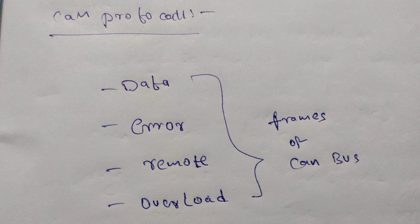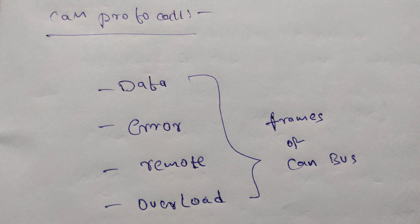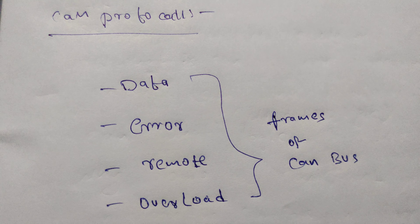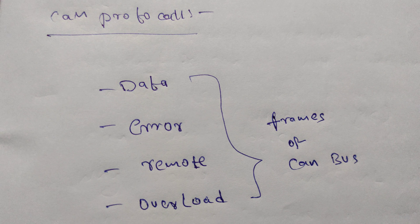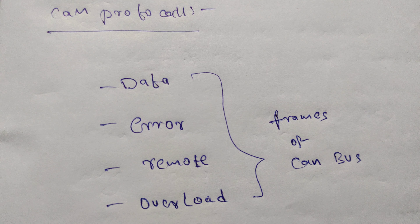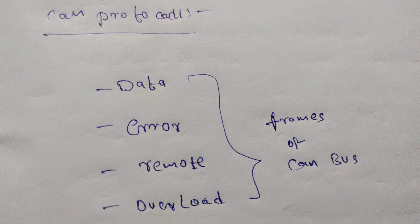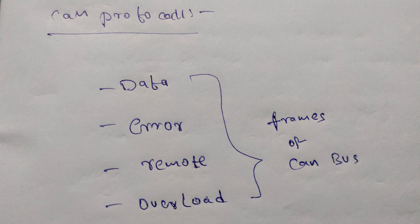The overload frame is used to slow down or synchronize the data transfer between the receiver and transmitter over the CAN bus.